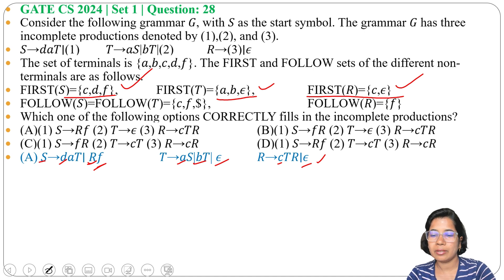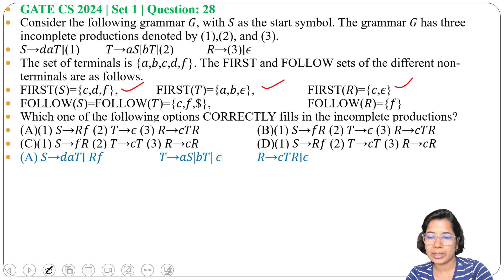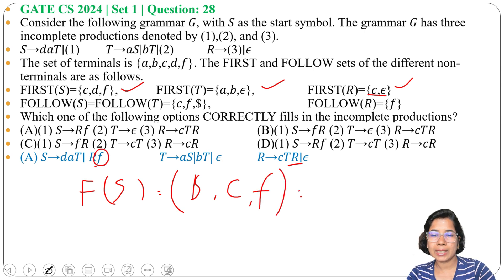Next we will find follow. So follow of S equals to follow of T. Follow of S will contain dollar. Follow of T equals to first of R. What is first of R? C and Epsilon. So we can write C. And if it's Epsilon we are getting F. So dollar, C, and F are follow of S, also follow of T. As follow of T and follow of S are same, next follow of R equals to F.